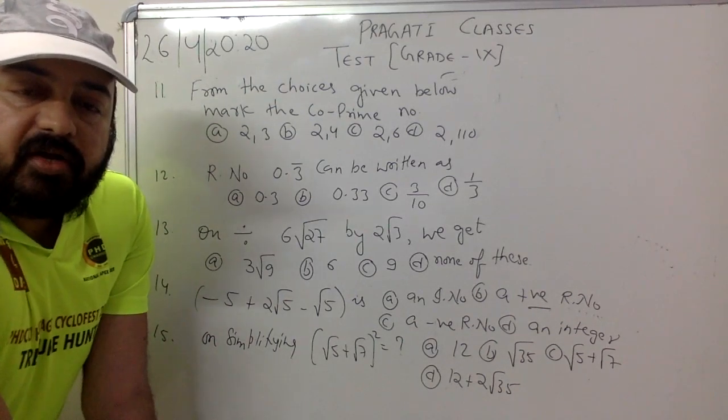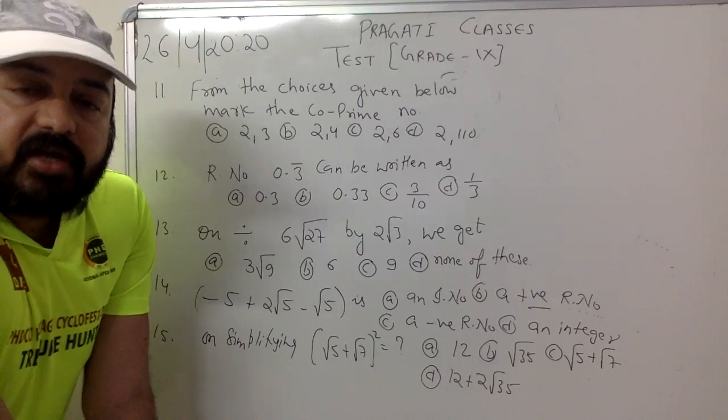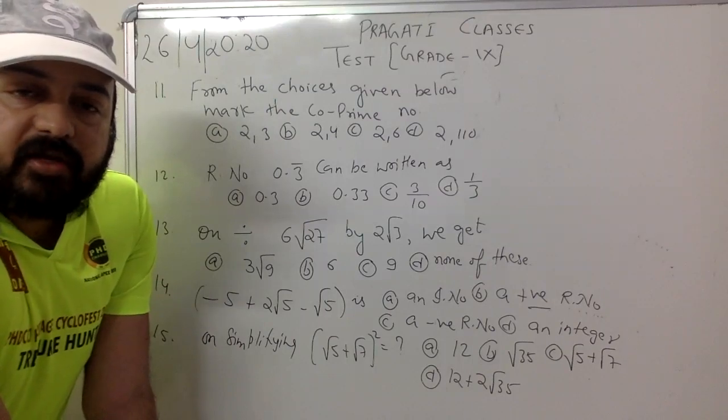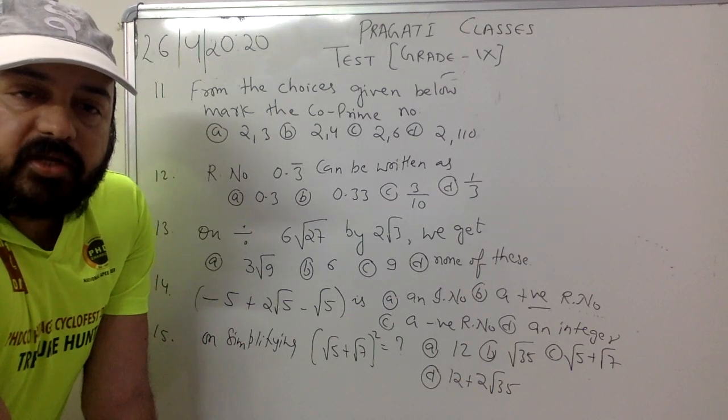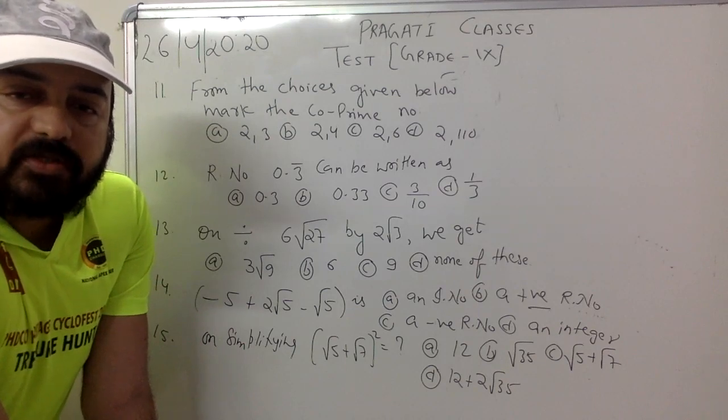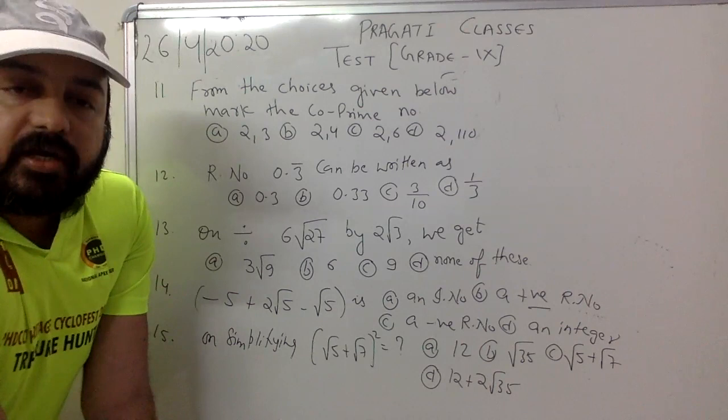Question number 13. On dividing 6 root 27 by 2 root 3, we get: option A 3 root 9, option B 6, option C 9, and option D none of these.